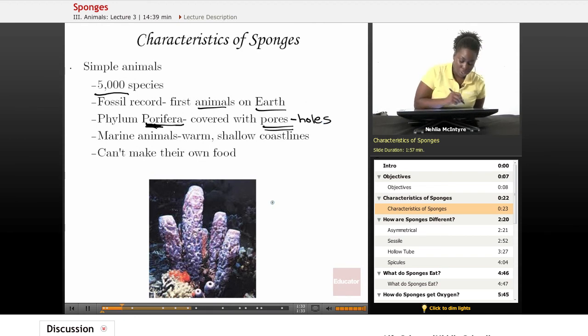Now sponges live in the ocean, so they're marine animals. And some can also live in fresh water, but the majority are found in salt water. And they're found in very warm, shallow, maybe even tropical coastal areas.